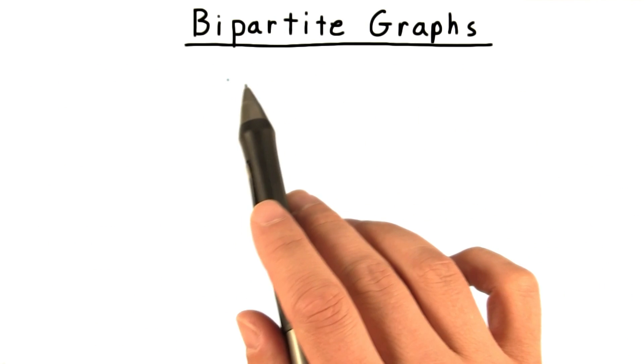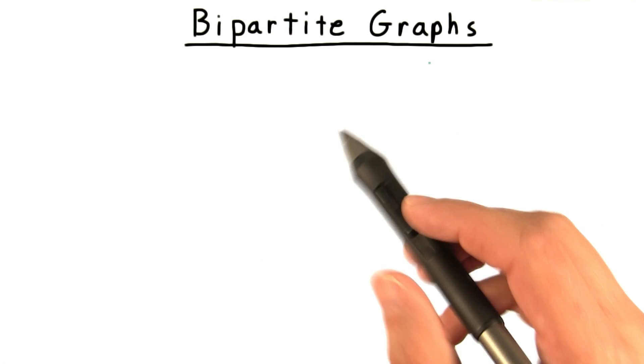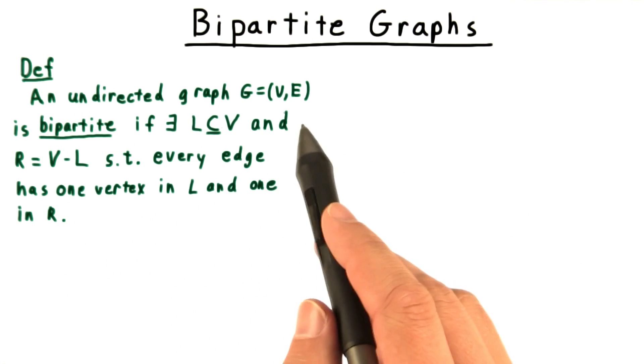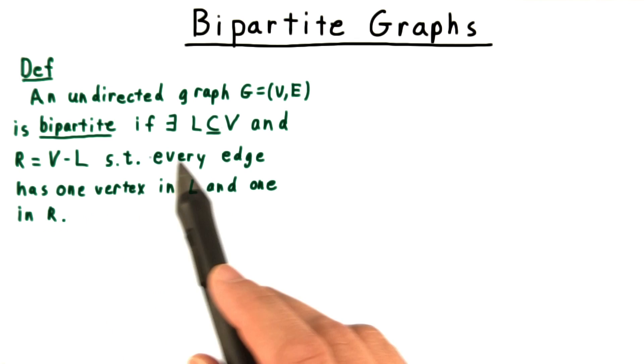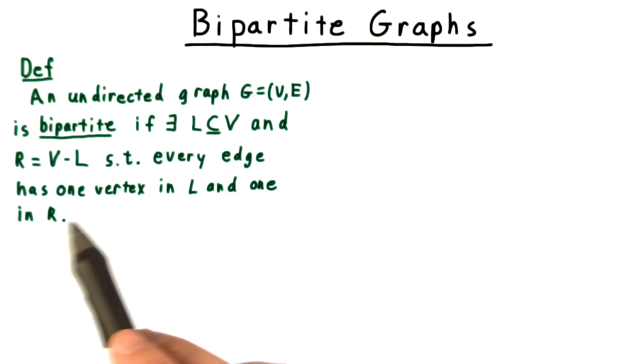We begin our discussion by defining the notion of a bipartite graph. An undirected graph is bipartite if there exists a partition into L and R, think left and right, such that every edge has one vertex in L and one in R.